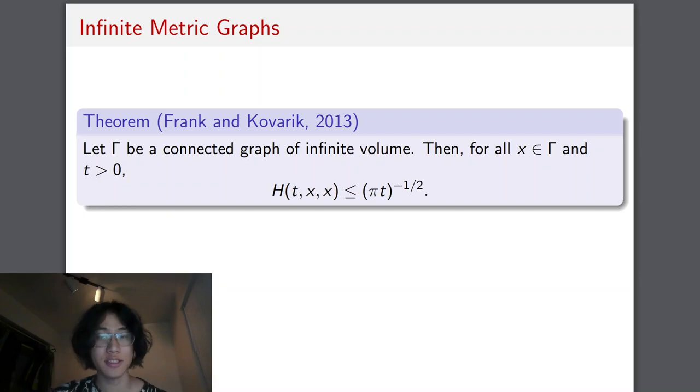Now a significant thing I've been studying over the summer is infinite metric graphs, or more specifically trees. But this theorem is really nice because it doesn't assume anything about the structure of the graph. It could be a tree, it could be whatever. But it's basically saying that if you have an infinite graph, then we have this really nice upper bound on the diagonal of the heat kernel, which is simply just the transition density from x to itself.